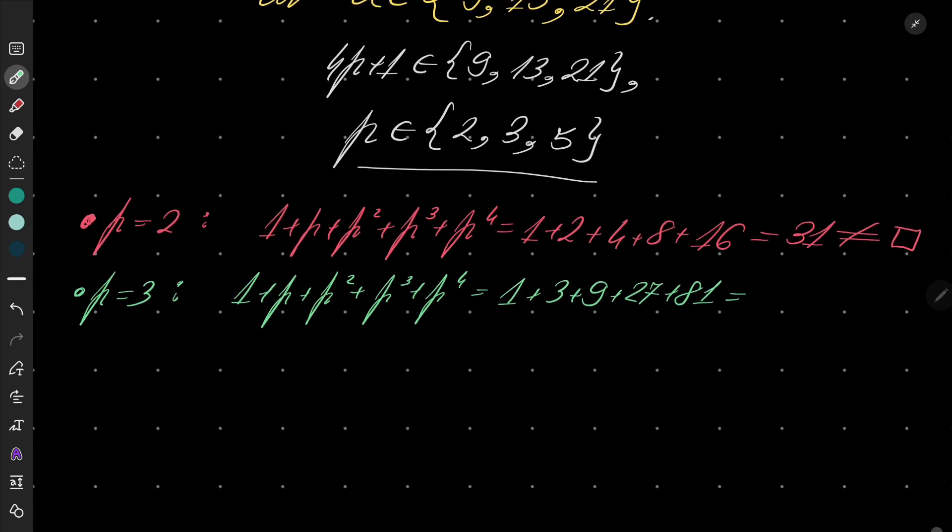And let's see. 81 plus 9 is 90, 27 plus 3 is 30. So we have 121. It's 11 squared.